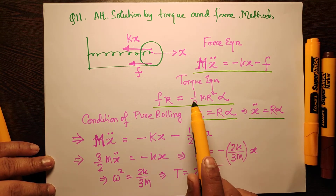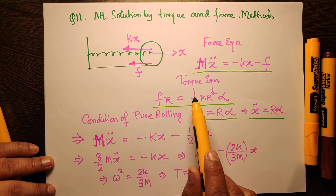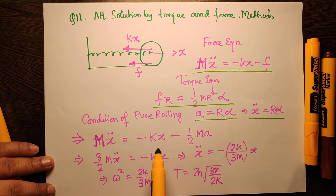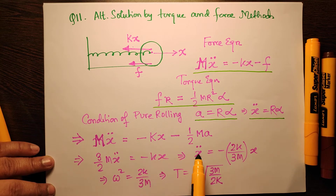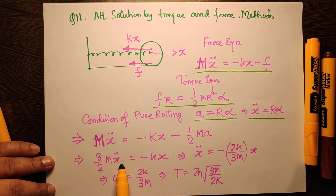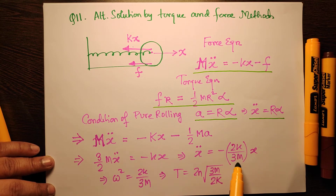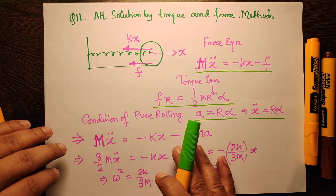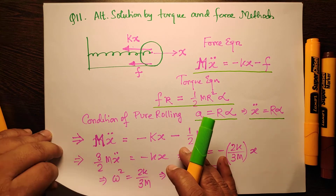Now we combine equations 2 and 3, then substitute into equation 1. We get m·x'' = −kx − (1/2)·m·a, which gives (3/2)·m·x'' = −kx. Therefore x'' = −(2k/3m)·x, giving the same answer as before.